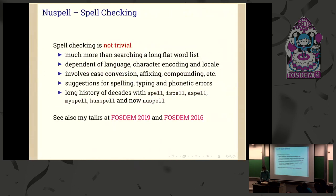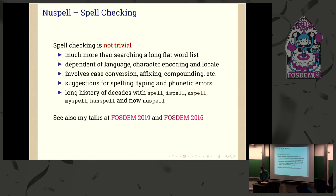I'm going to go quite rapidly through this. Spell checking is not trivial. Some people think it's just a long list of words — you check if the word is in the list and then you know if it's spelled correctly or not. Usually for some languages those lists would be endless, so all sorts of mechanisms have been devised in order to do spell checking, to support conjugations, complex morphologies, compounds and so on.